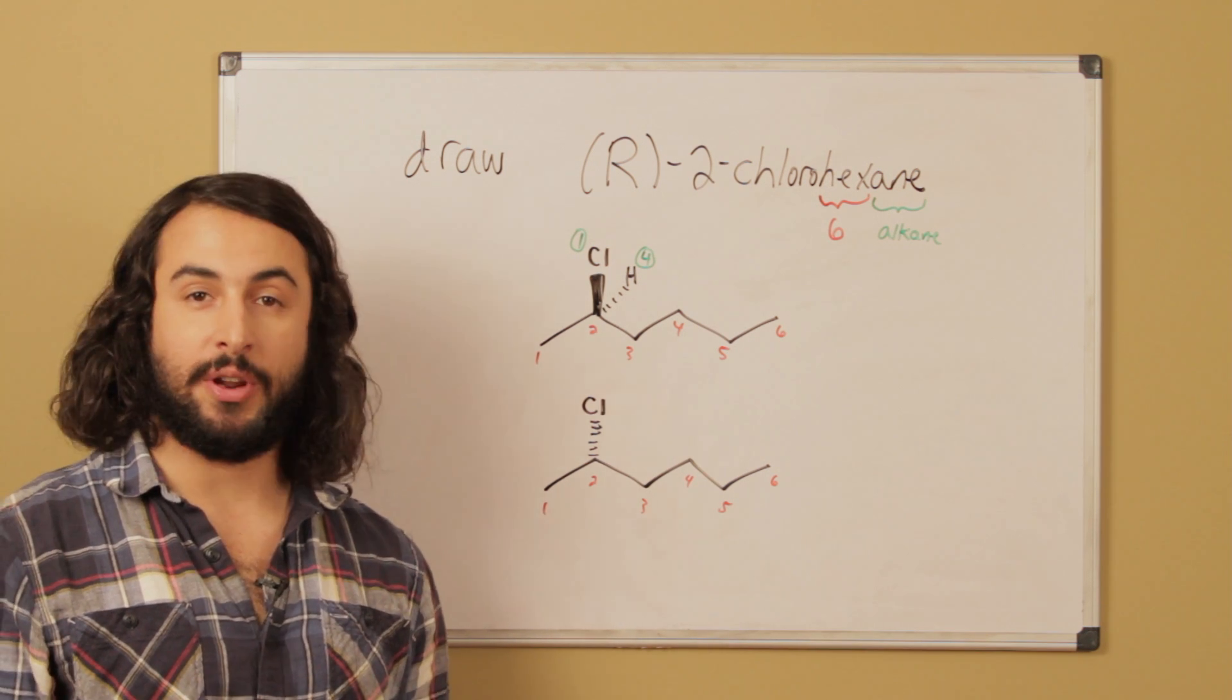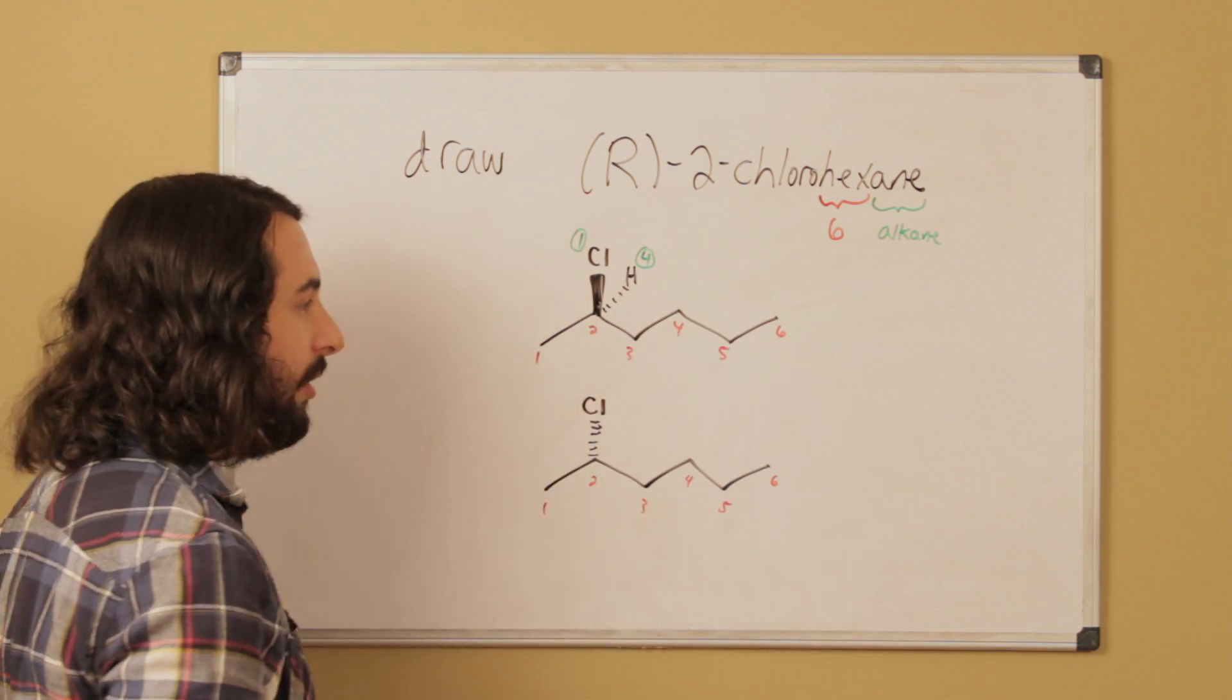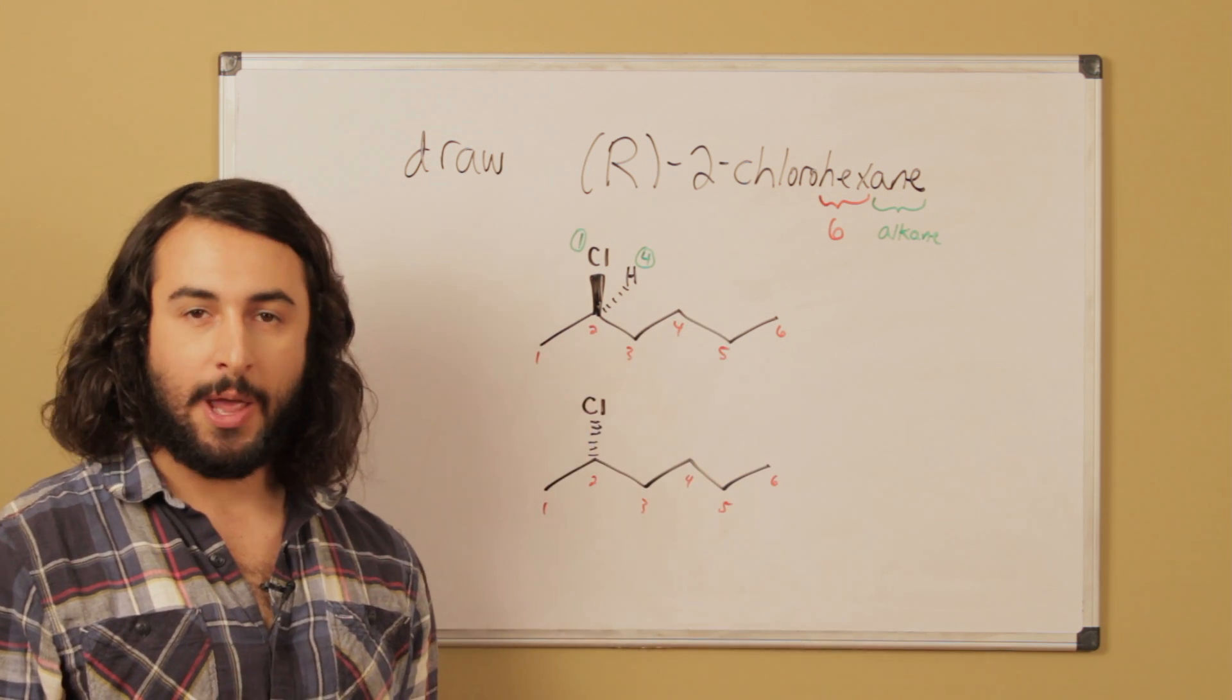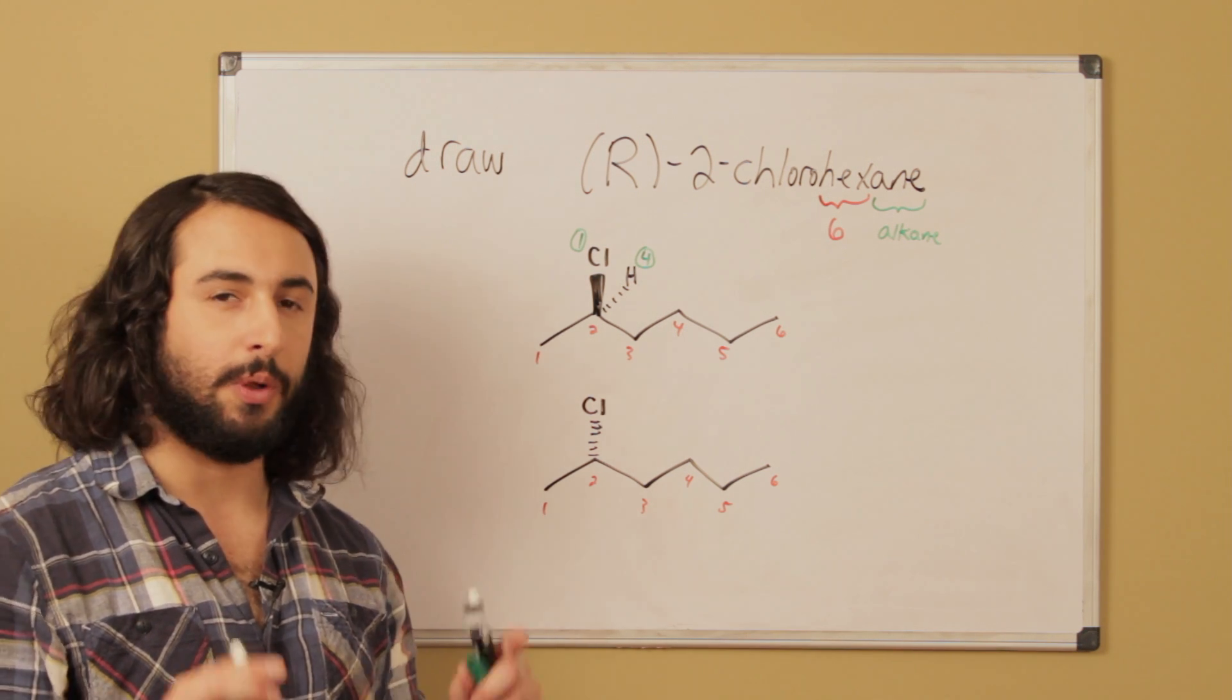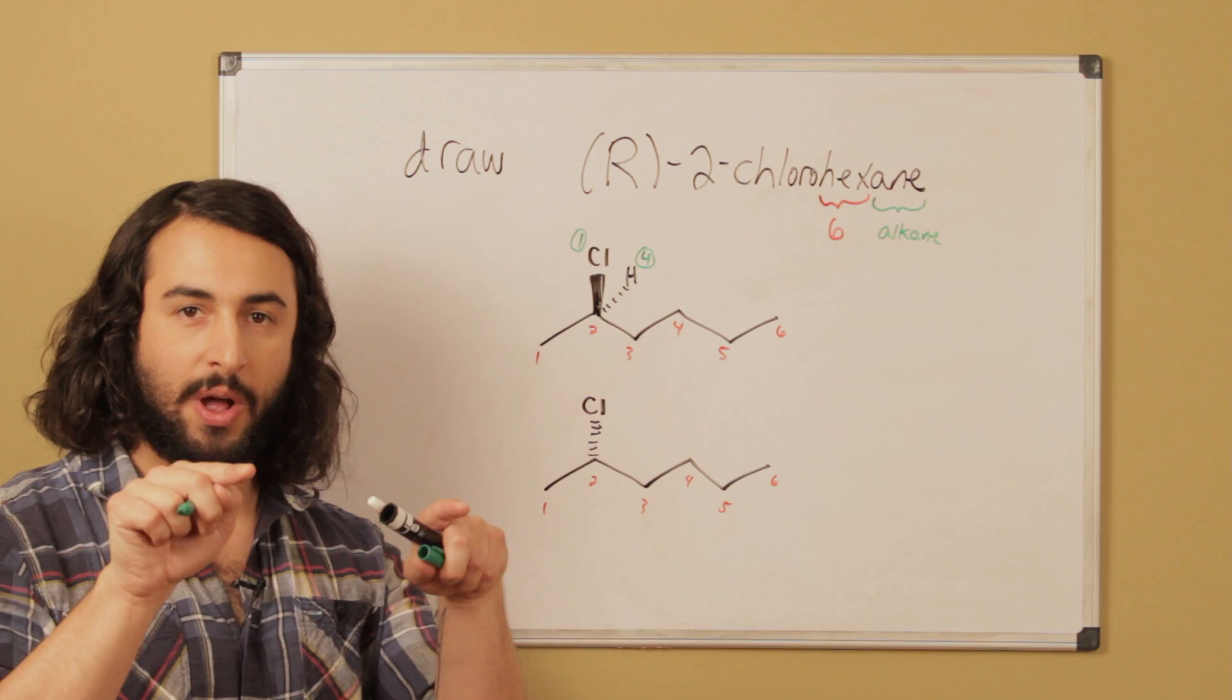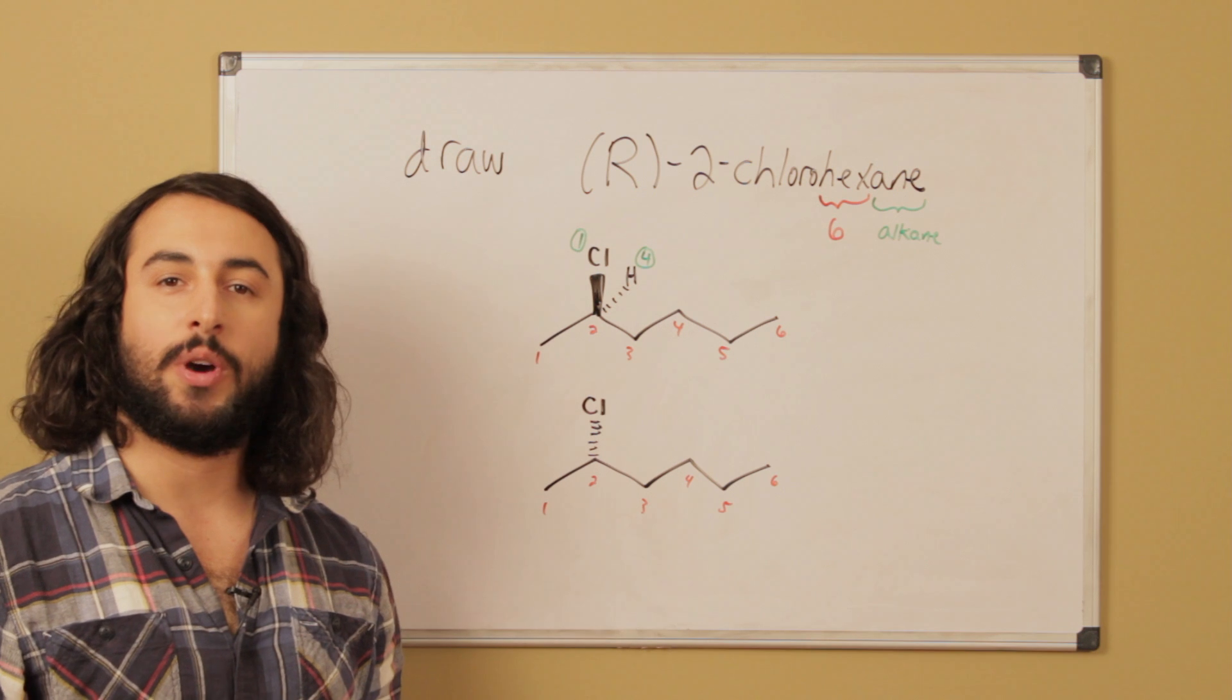We should also make a note that it's very tempting to look at this entire big group and say that this beats this methyl, and in this case we might be right. But you will be led astray at some point if you think that way. We really do have to put on our blinders and go one atom at a time. So what we do is we say carbon and carbon—well that's a tie. So what atoms are those carbons attached to?